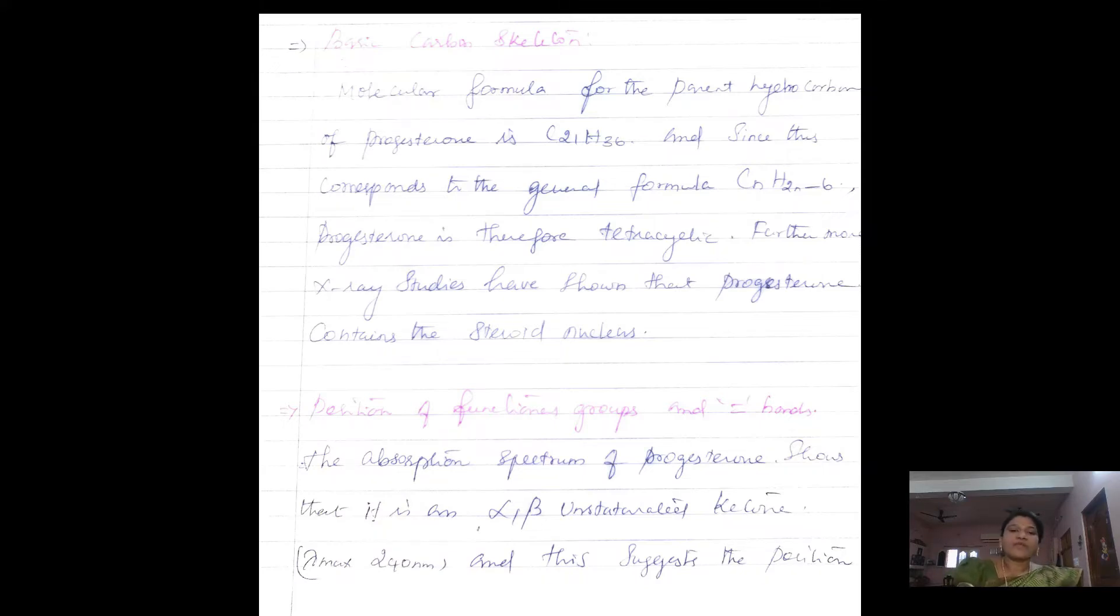Then we have to find out the position of double bonds and the position of two keto groups present in its structure. The UV analysis shows it is an alpha-beta unsaturated ketone with a lambda max value of 240 nanometers. It suggested the presence of a double bond between the 4th and 5th position in its structure.